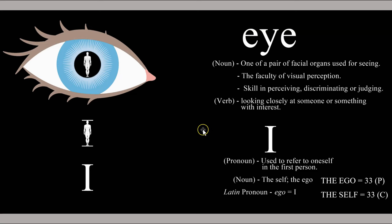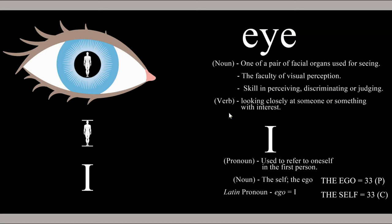The words 'eye' and 'I' are closely related to one another, just as implied by how they sound phonetically. 'Eye' being one of a pair of facial organs used for seeing, and the faculty of visual perception. When an individual claims to have an eye, or a good eye, for something, it implies having skill in perceiving, discriminating, or judging. When used as a verb, 'eye' implies looking closely at someone or something with interest.